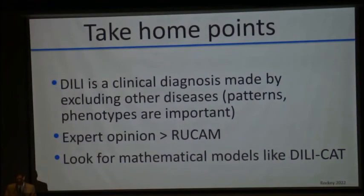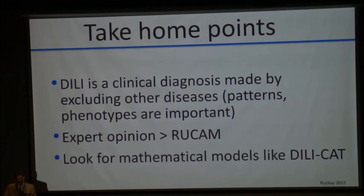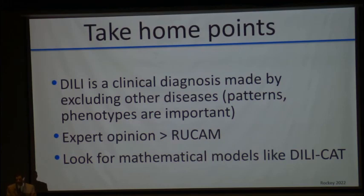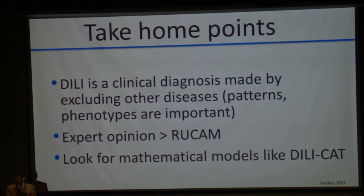A couple of take-home points: DILI is a clinical diagnosis made by recognizing specific patterns of liver test abnormalities and excluding other diseases. Expert opinion is better than RUCAM and right now is the best causality assessment tool. However, you are going to see mathematical models come up in the very near future, and hopefully the study we just published will be the first step. Thank you for your attention. It's been great to visit you here, and I look forward to the rest of the day. I'd be happy to answer any questions.